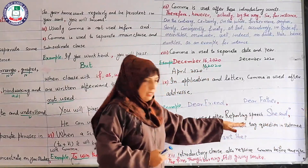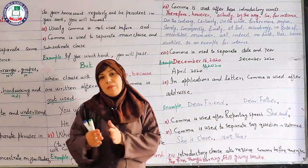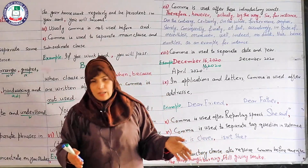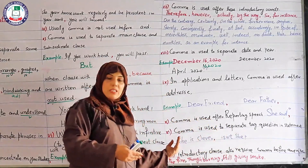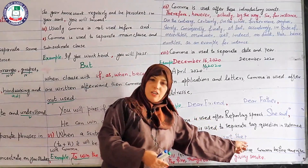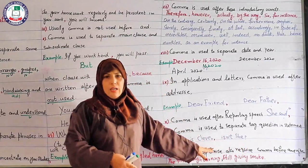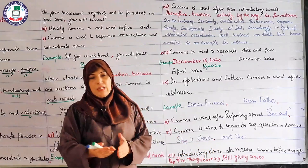Next: comma is used to separate the tag question from the statement. A statement is given, and a short question is added to it for confirmation — this is called a tag question. For example: 'She is clever, isn't she?' or 'It's very hot, isn't it?' The tag question is separated from the statement by a comma. Tag questions are those whose answer can be given in yes or no, and they relate to the statement being made.